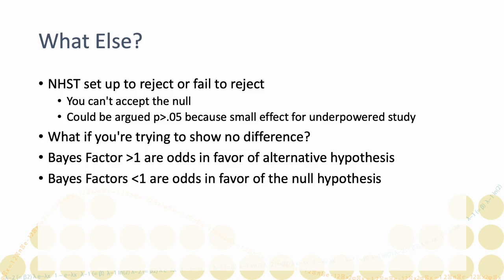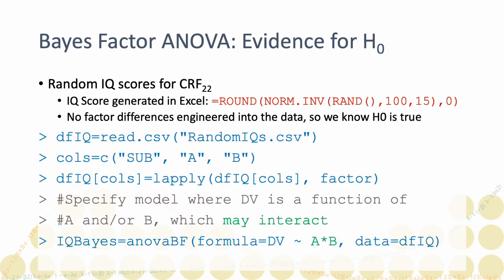I'll use a factorial design just to show you the syntax for Bayesian ANOVA on more complicated designs. I've generated some fake IQ scores for 12 participants in each of 4 conditions from a 2x2 factorial design. No systematic differences were built into the random IQ scores because all scores were generated by the Excel function shown in red.